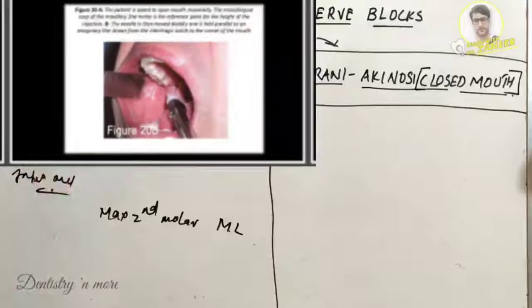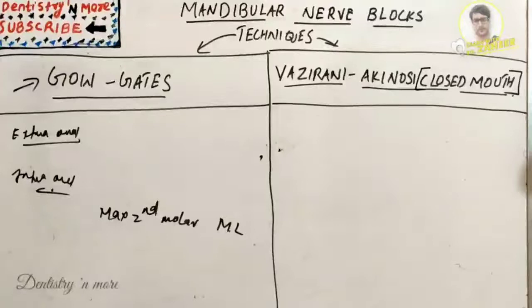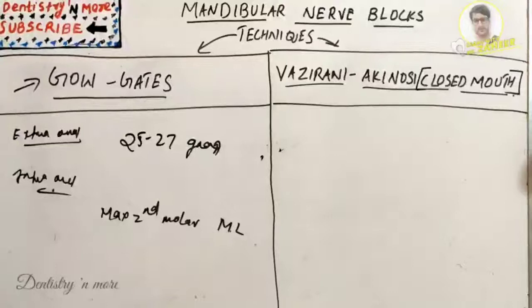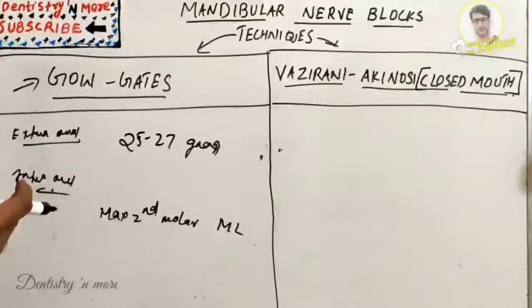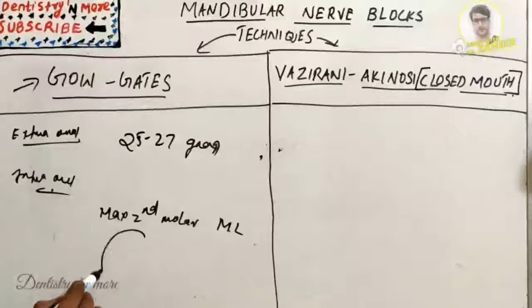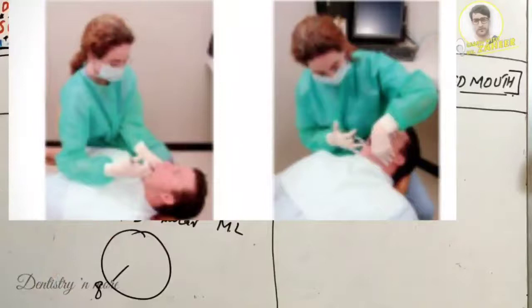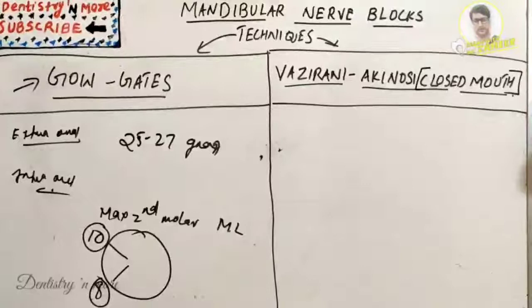For the technique, a 25 to 27 gauge needle is used. The patient should be in supine position. For a right-side block, a right-handed administrator sits at the 8 o'clock position. For a left-side block, the right-handed administrator sits at the 10 o'clock position. The patient is asked to open the mouth, and the mesiopalatal cusp of the maxillary second molar is identified.